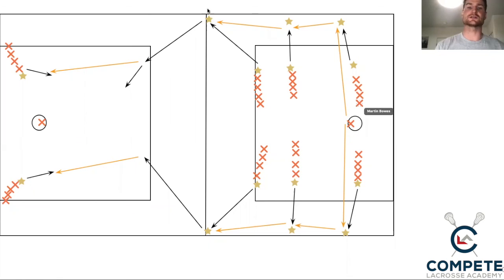One cone is for where they start. The second cone is for where they cut to. If you wanted to add another cone to this drill might make sense to add cones here because that's where we want this player to catch and run to before they make that pass.